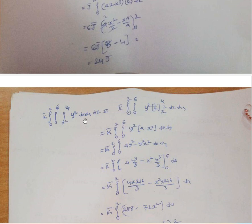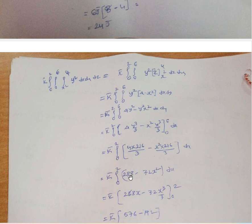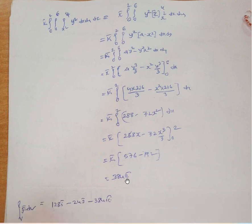For the k̄ term: k̄ · ∫∫∫ y² dx dy dz. Integrating with respect to z, y² is constant, so integral of 1 dz = z from x² to 4, giving y²·(4 − x²) dx dy, which is (4y² − y²x²) dx dy. Integrating with respect to y: 4·y³/3 − x²·y³/3 from 0 to 6, giving (288 − 72x²) dx. Then integrating with respect to x: 288x − 72·x³/3 from 0 to 2, simplifying to 384 k̄.